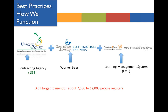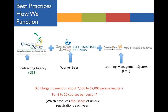Each year we have about 7,500 to 12,000 people register for 3 to 10 courses per person, which is thousands of unique registrations each year — which of course brings up a lot of questions and a lot of people calling in and emailing us. We get the data from Right From the Start, get it into Desire2Learn, then send it back into Student Manager at Georgia State and then back to Right From the Start.